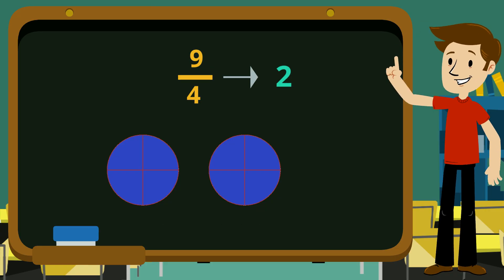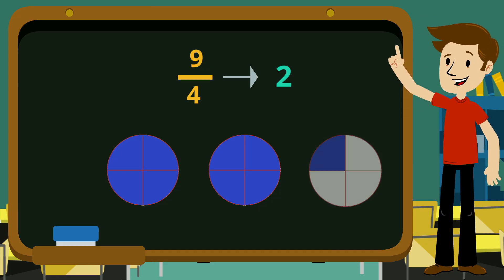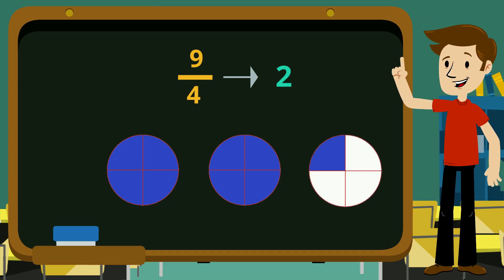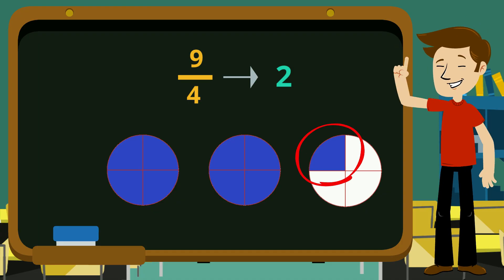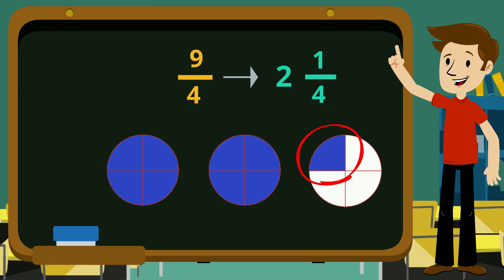Then we get our numerator from the number left over, because while there weren't enough quarters left to make a new whole, it's important that we don't forget that this single quarter is also a part of our number.